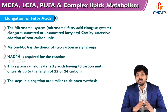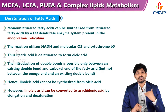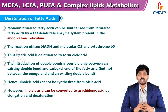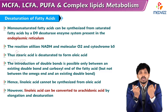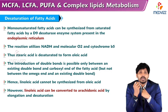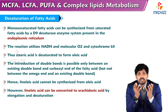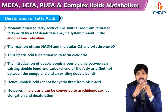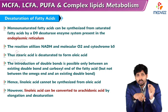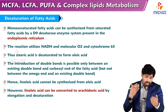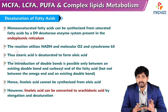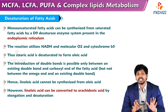The steps in elongation are similar to de novo synthesis. Regarding desaturation of fatty acids — analogous to denaturation of proteins — our body cells can only introduce one double bond at a time. Polyunsaturated fatty acids with more than one double bond cannot be made by our cells, which is why they are essential and must be obtained from outside the body. Monounsaturated fatty acids can be synthesized from saturated fatty acids by the D9 desaturase enzyme present in the endoplasmic reticulum.